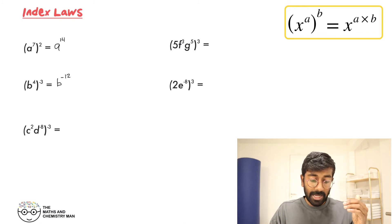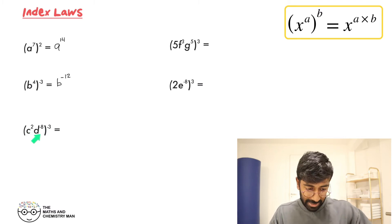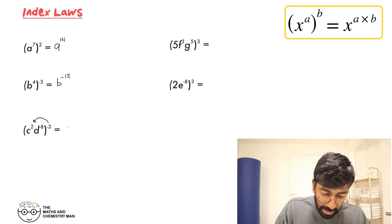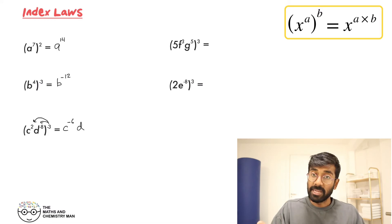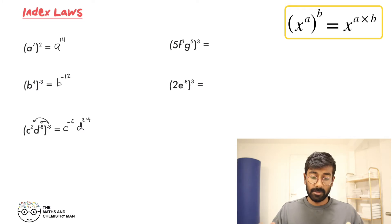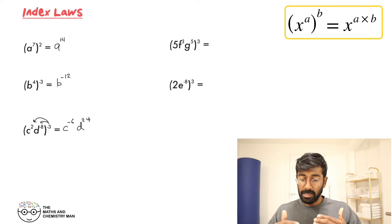Next one, we need to apply that power of minus 3 to both C and D. Multiply minus 3 with the 2 — that's C to the power of minus 6. Then multiply minus 3 with minus 8 — be careful, that's going to be positive — so D to the power of 24. Done.